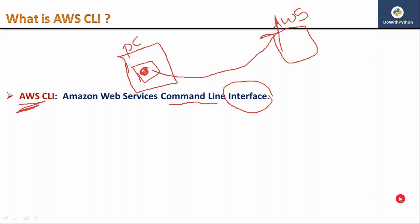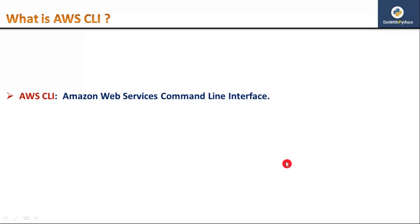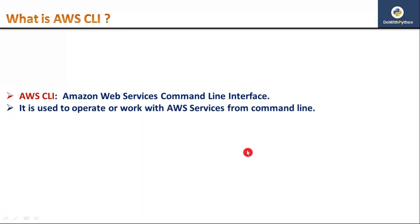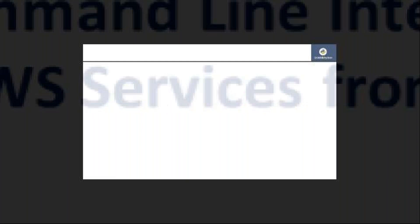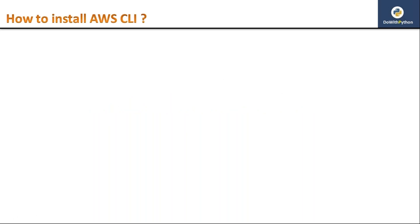So finally you can say that AWS CLI is used to operate or work with AWS services from the command line. Now in order to use AWS CLI commands to work with your AWS from the local host command line, you should have one package on your host - that is simply AWS CLI. So how do we install AWS CLI on your local host?